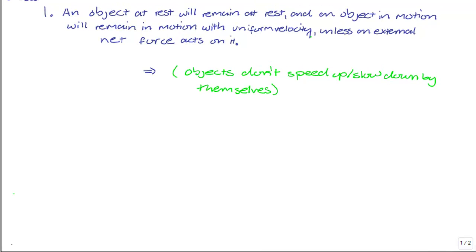Newton's first law states that an object at rest will remain at rest and an object in motion will remain in motion with uniform velocity unless an external net force acts on it. Notice I've underlined uniform velocity and net force. In simple terms, objects do not speed up or slow down by themselves. If you have an object resting on a table, it will remain there as long as no net force acts on it. If you apply a net force, the object will move off the table and drop to the ground.